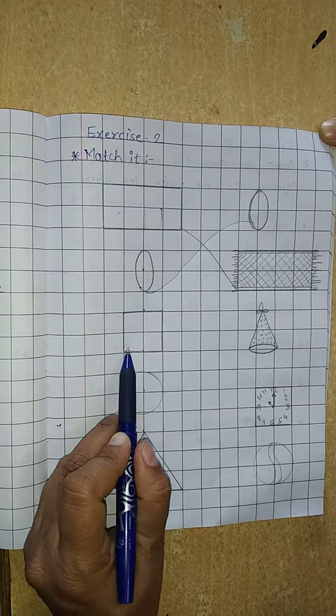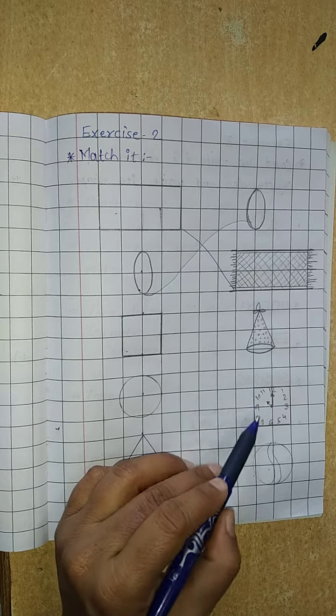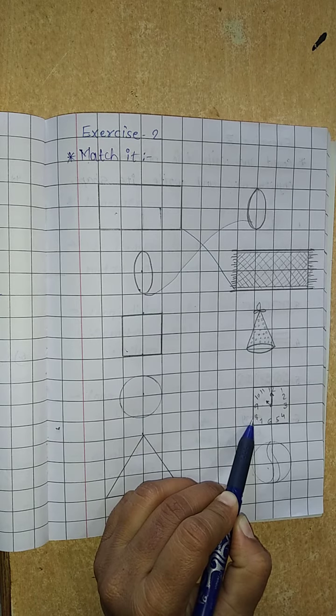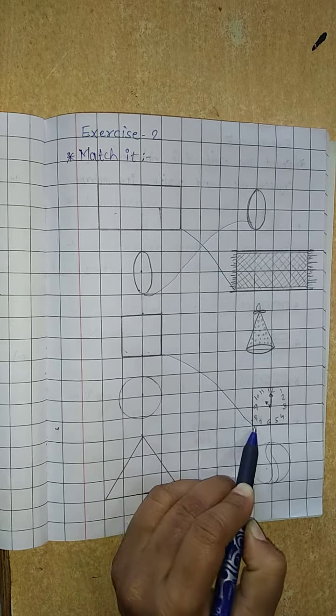Now next, here is given square. Now look here, here is watch. Now watch is in square shape. So we have to match square with watch.